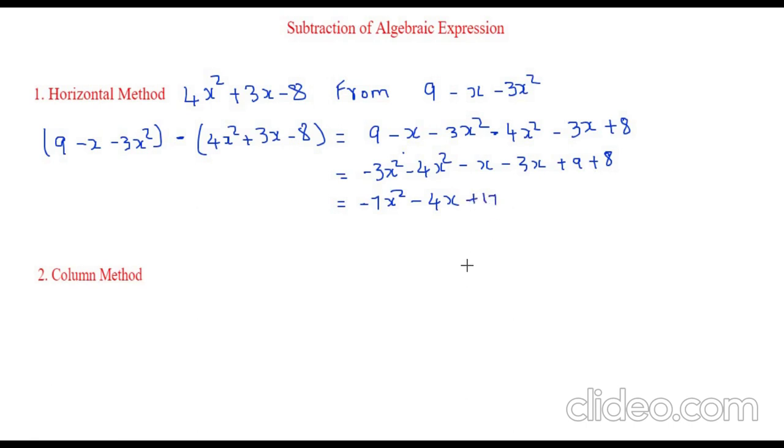So isn't it easy? You have to first group the like terms and then add them. So now let's take the same example and learn the column method of subtraction.